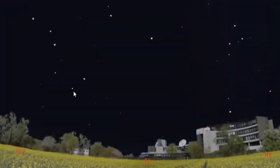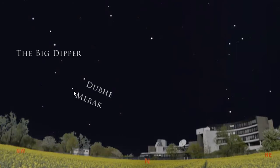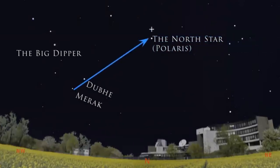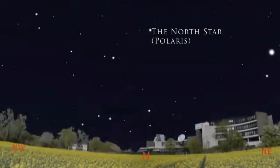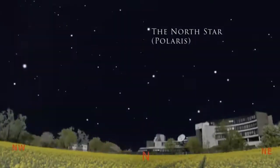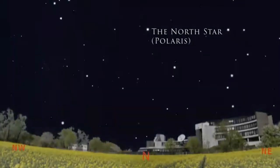If you remember from our last video, we found the Big Dipper. Take these stars in the cup of the Big Dipper — that's Merrick and Duby, I'm assuming I'm saying that correct — follow an imaginary line from these stars over to the next brightest star, and that's Polaris, or the North Star. Keep in mind that depending on the time of the year and the time of night, the Big Dipper may be in the northeast or in the northwest, and it is constantly rotating around the North Star about once per day.